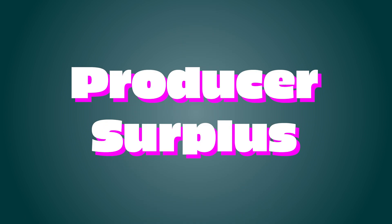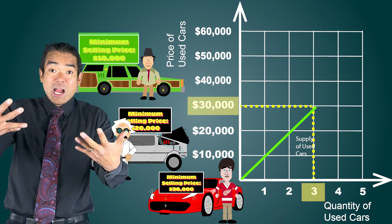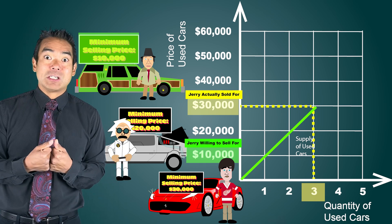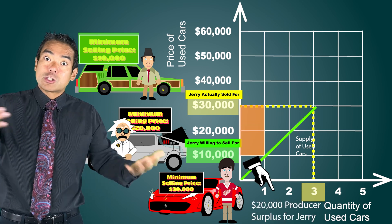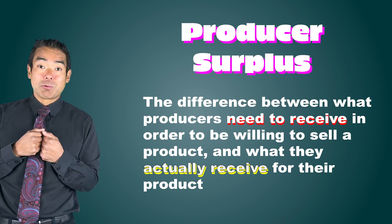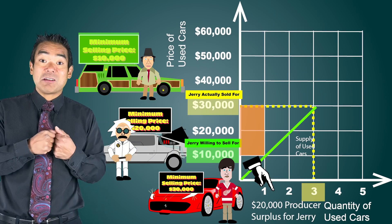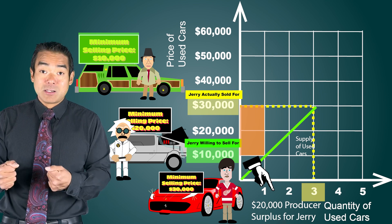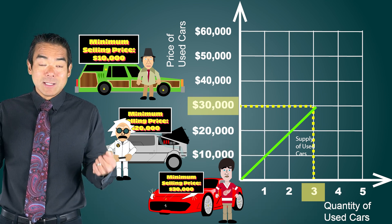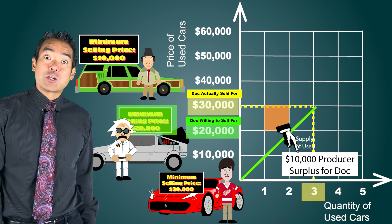We can also consider the difference between what sellers need to be willing to produce and sell their product and what they actually receive. When the market price is $30,000, all three sellers sell their car, but Jerry would have been willing to sell for only $10,000 — so Jerry gets an extra $20,000 of surplus, which we call producer surplus. Producer surplus is the difference between the price that producers need to receive to be willing to sell and what they actually get. Jerry gets $20,000 of producer surplus. Similarly, Doc gets $10,000 of producer surplus — he would have sold for $20,000 but actually received $30,000.